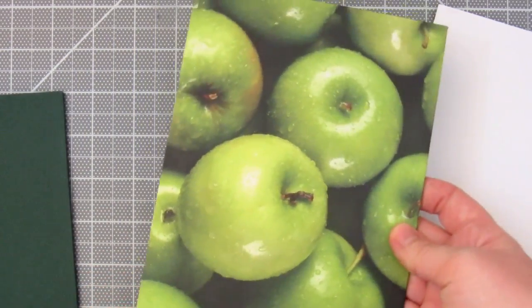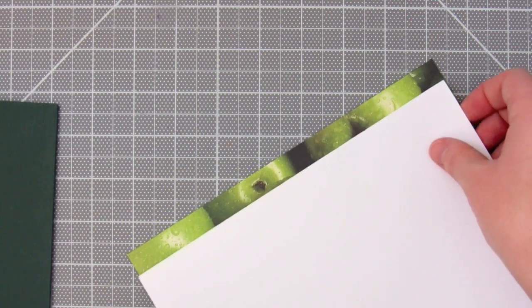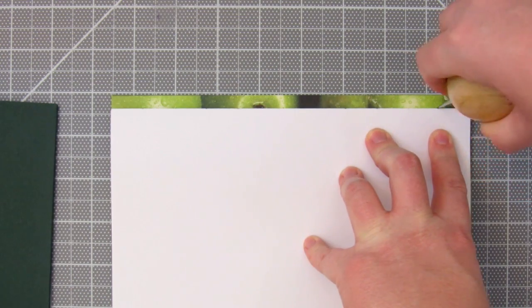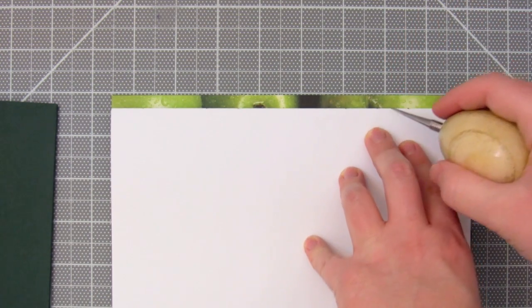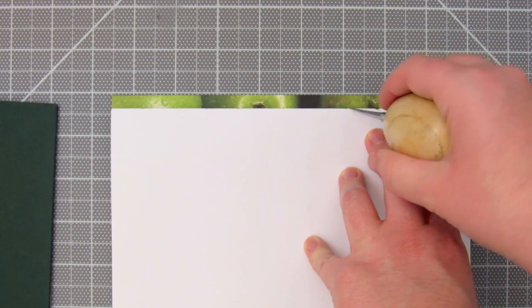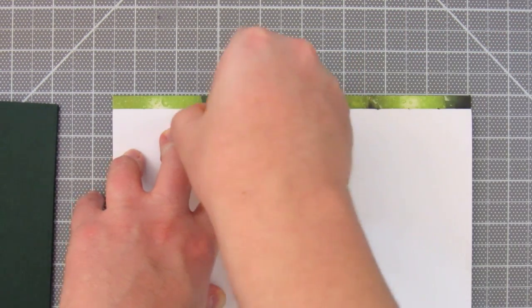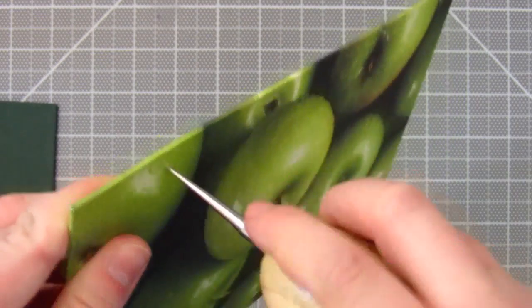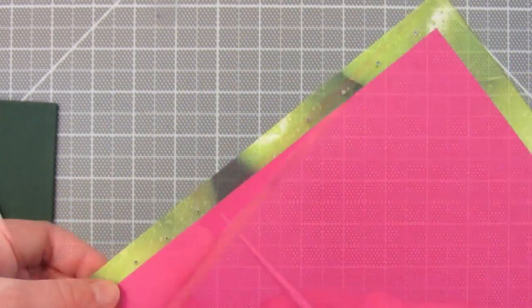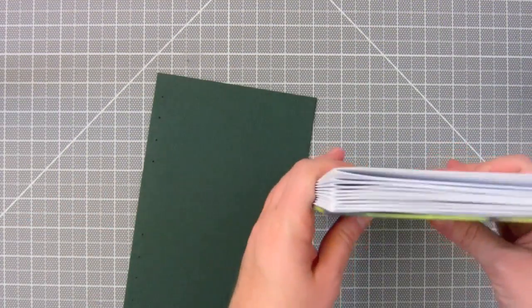Now take one signature, align it on the cover about a quarter inch from the edge, and pierce next to the signature holes. Then pierce the holes completely through so that your needle will be able to go through. Repeat this on the other cover.